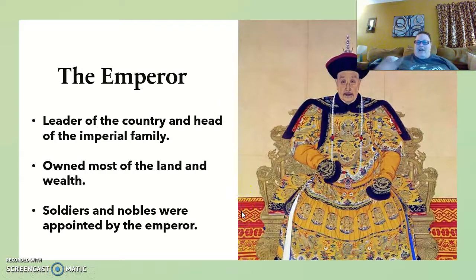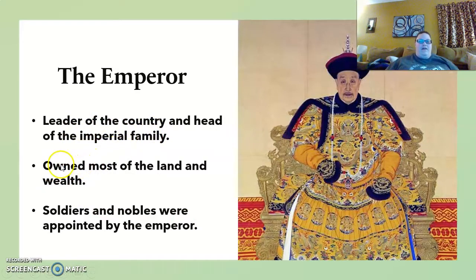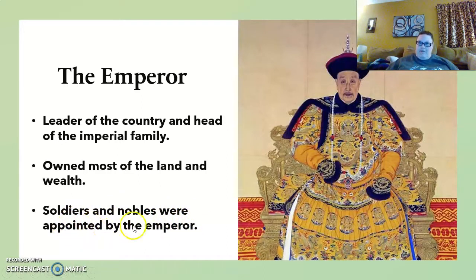So let's talk about the actual social hierarchy in China. At the very top was the emperor — he was the leader of the country and the head of the imperial family, the royal family. He owned most of the land and the wealth. Soldiers and nobles were appointed by the emperor, so the emperor got to choose who would be noble and who the soldiers would be.